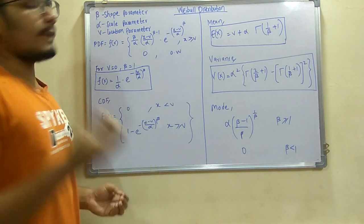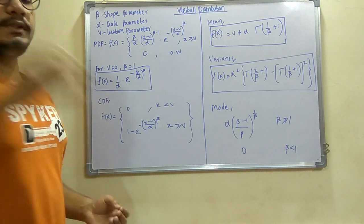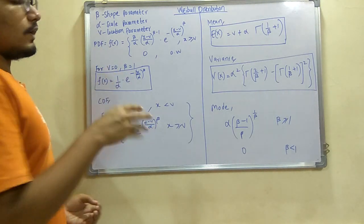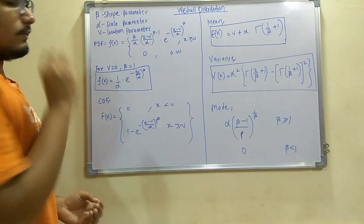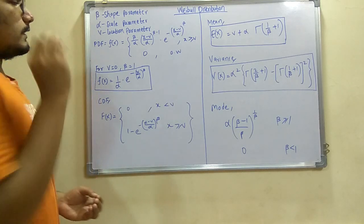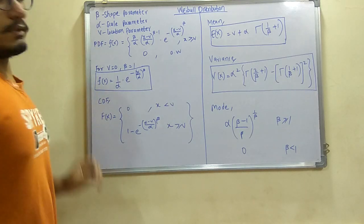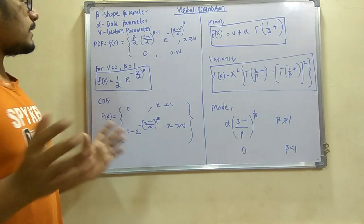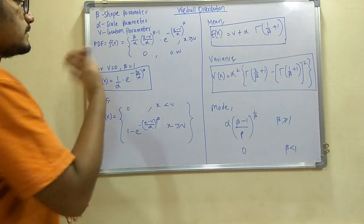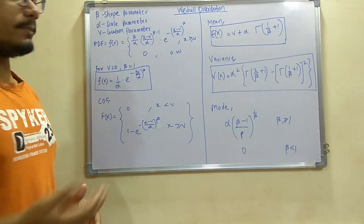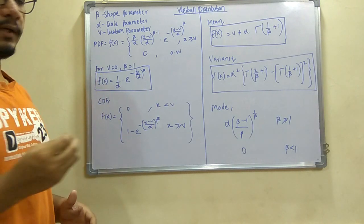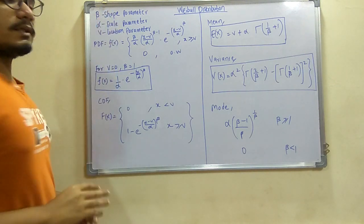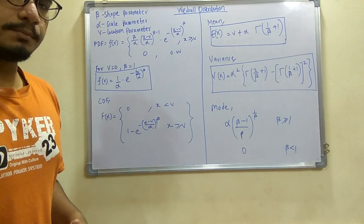Now talking about the parameters, first we have beta, the shape parameter. Whenever you encounter beta, alpha, and V, they mean these terms. Next we have alpha, the scale parameter. Next is V, the location parameter where we will be locating it. These three notations and descriptions remain same for triangular distribution as well.